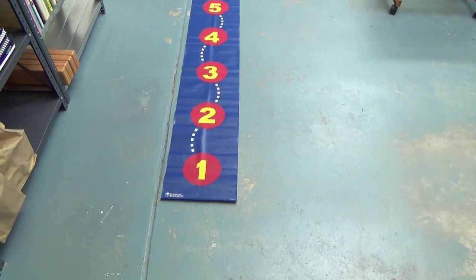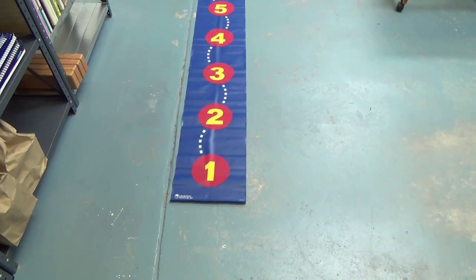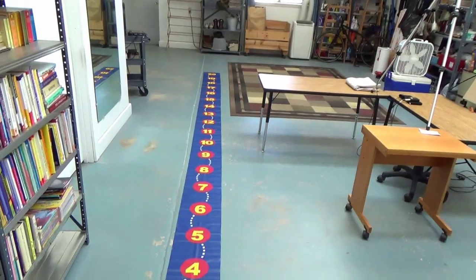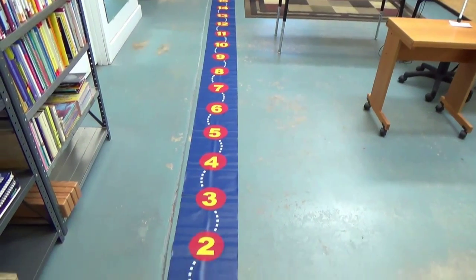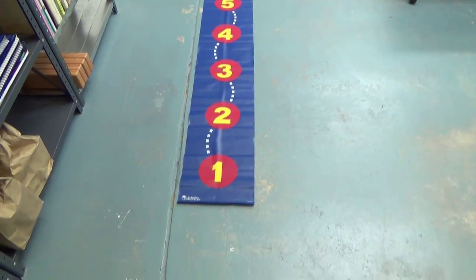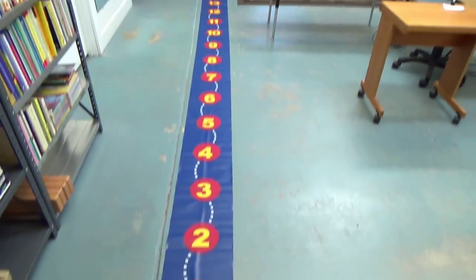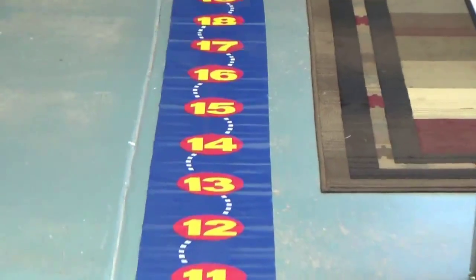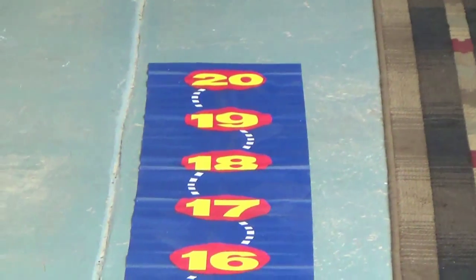Hi, everyone. As you can see, I'm on the move now. And I'd like to introduce you to the walking number line. As you can see, it's a strip of vinyl with all the numbers from one through 20. I'll give you a close up down at the other end. There you go.